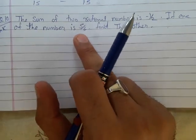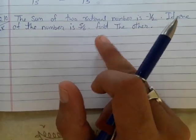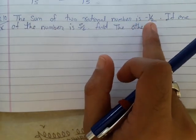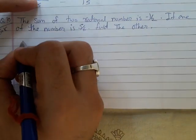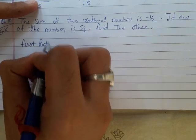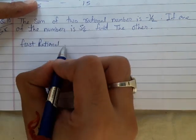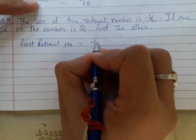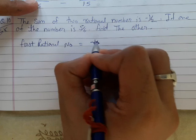One rational number is given, it is 5 upon 6, and the second rational number we have to find. The sum of both rational numbers is minus 1 upon 2. So I can say first rational number is equals to, sorry, 5 upon 6.